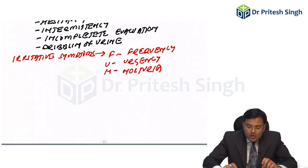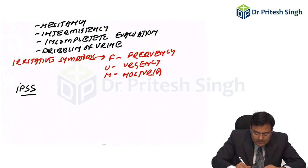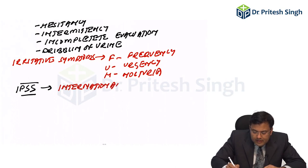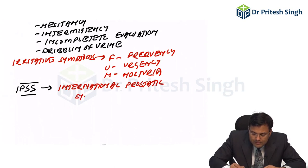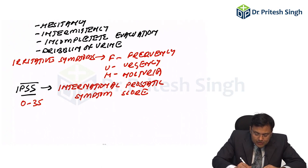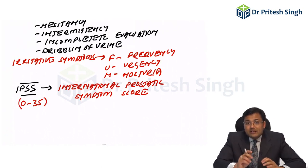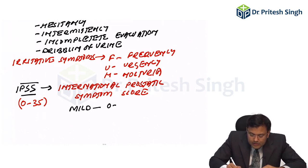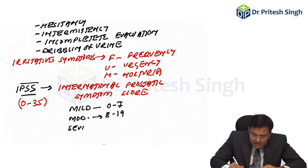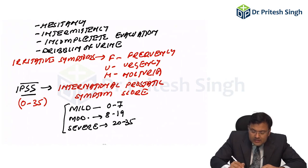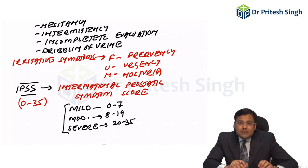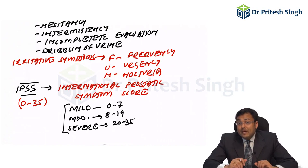In patients of BPH, we calculate one score known as IPSS — International Prostatic Symptom Score. The score varies from 0 to 35. Mild symptoms: score 0 to 7. Moderate symptoms: score 8 to 19. Severe symptoms: score 20 to 35. But remember, there is no correlation between size of prostate and severity of symptoms.